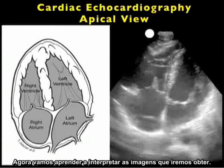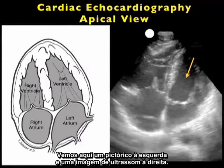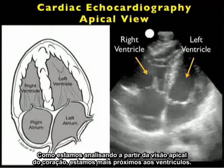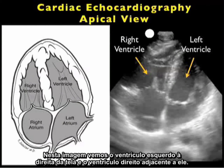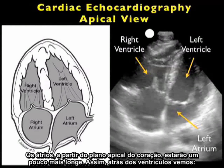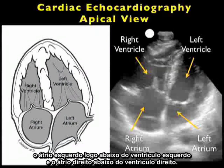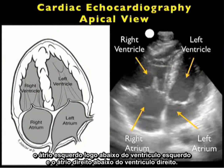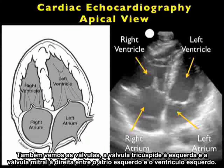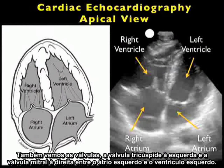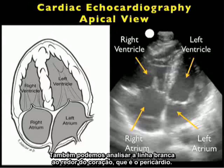Now let's learn how to interpret the images we'll obtain. We see here a pictorial to the left and an ultrasound image to the right. As we're imaging from the apical view of the heart, we're closest to the ventricles. We see the left ventricle to the right of the screen and the right ventricle adjacent. The atria will be further away, posterior to the ventricles — the left atrium just below the left ventricle, and the right atrium below the right ventricle. We also see the valves: the tricuspid valve to the left, and the mitral valve to the right, in between the left atrium and left ventricle. We can also appreciate the white lines surrounding the heart, which is the pericardium.